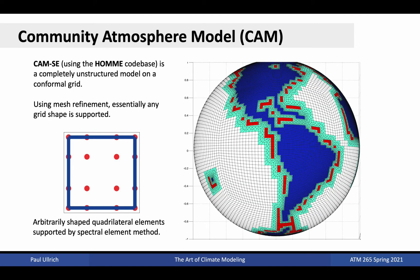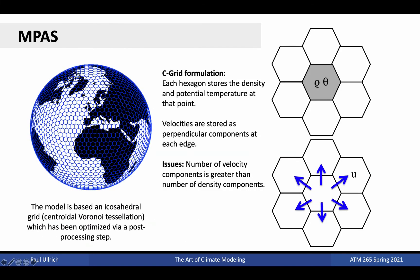The CAM Spectral Element Model, which employs the SE dynamical core, also supports completely unstructured quadrilateral grids, which can be generated in effectively any pattern. The plot shown here depicts one such grid where the refinement criteria uses a map of the global land surface. The MPAS dynamical core employs a staggered finite volume method on an icosahedral grid, or more generally a centroidal Voronoi tessellation, which primarily consists of hexagonal cells that are uniformly arranged to cover the sphere. It staggers velocity and mass variables so that mass is represented as a cell average, and velocity is placed on cell edges. Such a configuration has desirable numerical properties and avoids checkerboarding effects related to co-located variables.